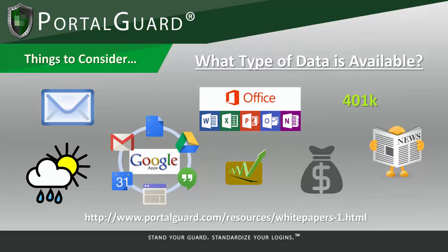Up on the screen here, these are very common things to provide in a portal — some of them that you would want to be secured, say email or access to Google Apps or Office 365, or even their 401k, and others that are readily available through the public domain: stock quotes, the latest news, maybe a weather forecast, things of that nature. Many public-facing portals fall into the hybrid category that I just described.